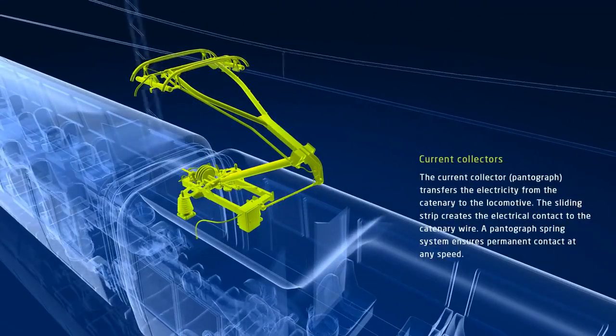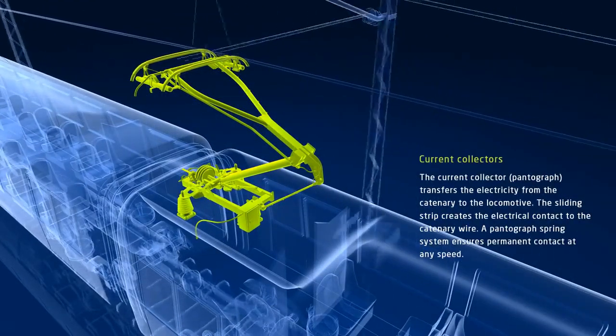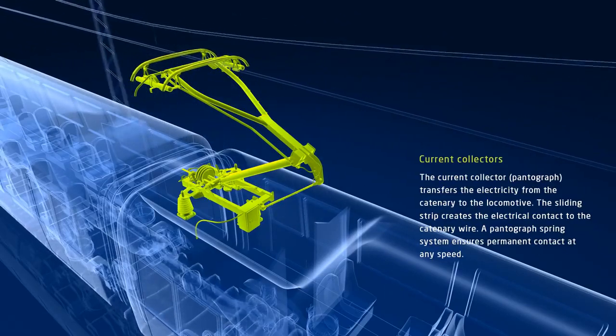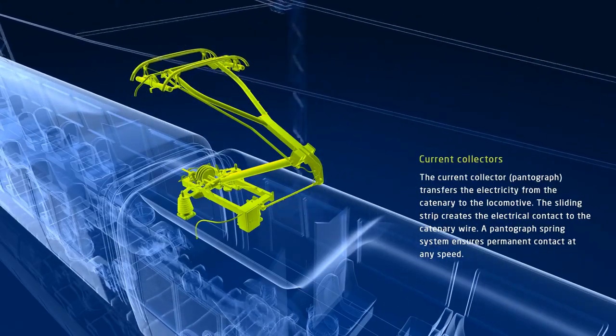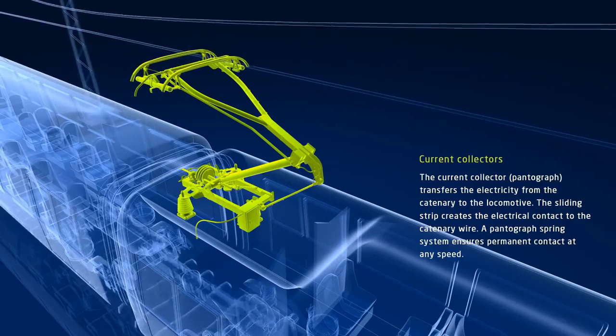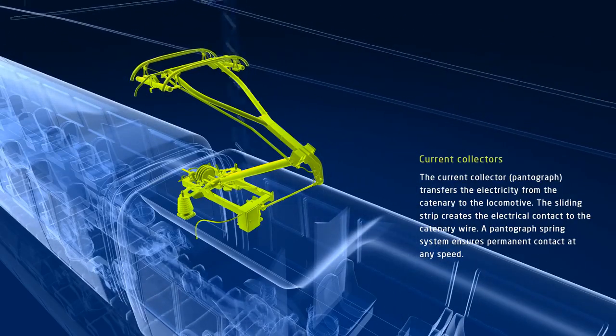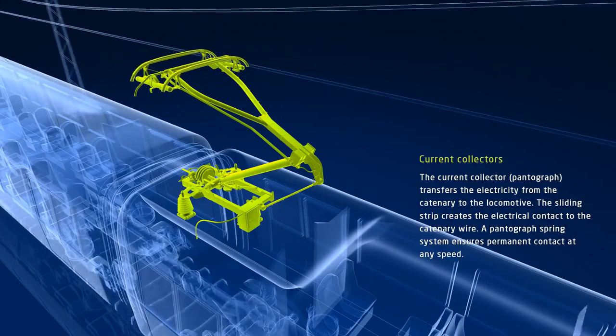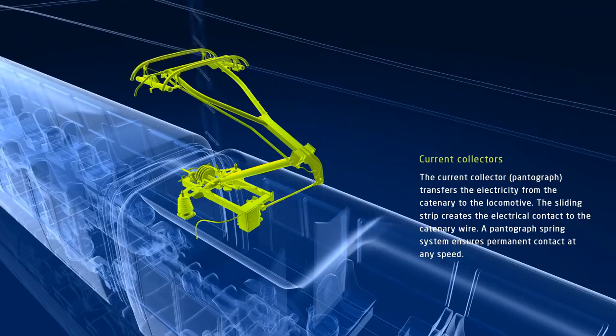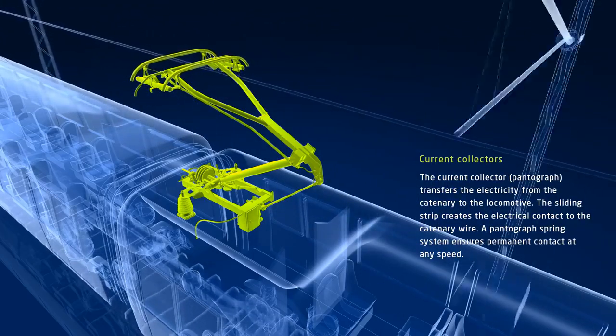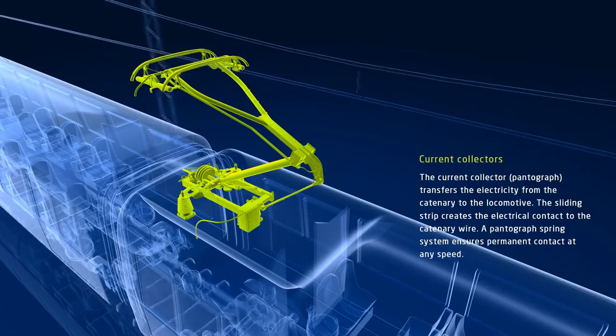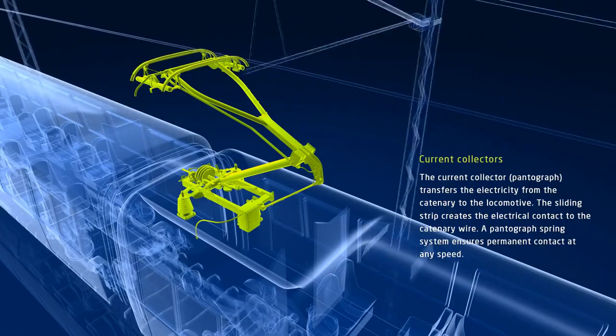Pantographs are current collectors that transfer the electricity from the catenary to the train motor. The sliding strip creates the electrical contact to the catenary wire. A pantograph spring system ensures permanent contact at any speed, even at speeds greater than 400 kilometers per hour. The high-speed pantograph by Schunk guarantees uninterrupted electric current transfer.